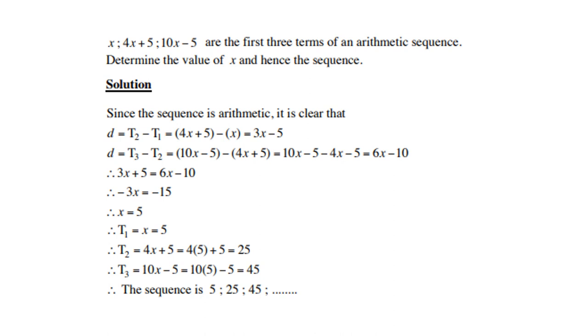Then you can go back and substitute, so x is 5, so therefore, term 1 is 5. 4x plus 5 is 25, and so forth. Term 3 is 10x minus 5 is 45. So therefore, the sequence is actually 5, 25, and 45.